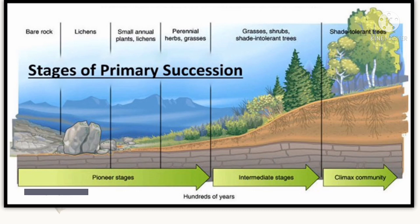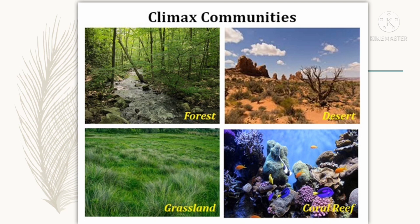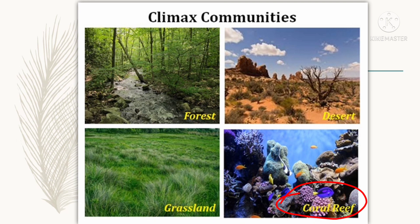Examples of climax communities include deserts — where there are proper plants and cacti — and the Amazon rainforest situated in Brazil, which is the best example of a climax community. Forests, grasslands, and coral reefs are also climax communities — all are examples where there is stable life, and organisms are surviving and doing give-and-take, producing and consuming in an equilibrium state.